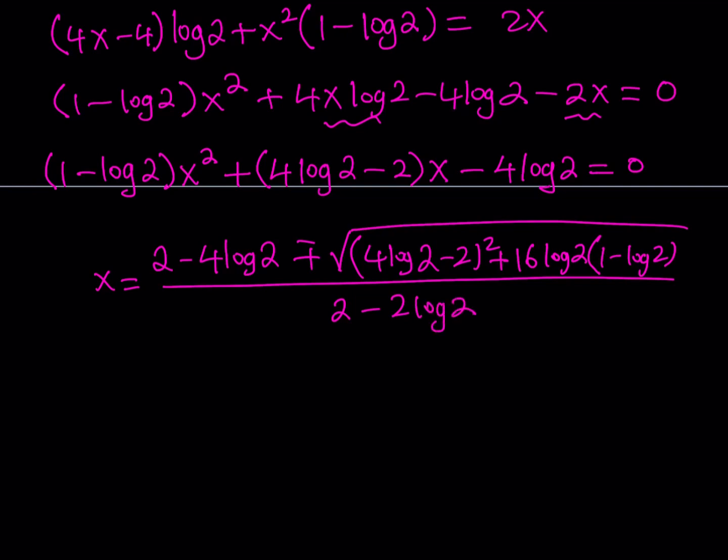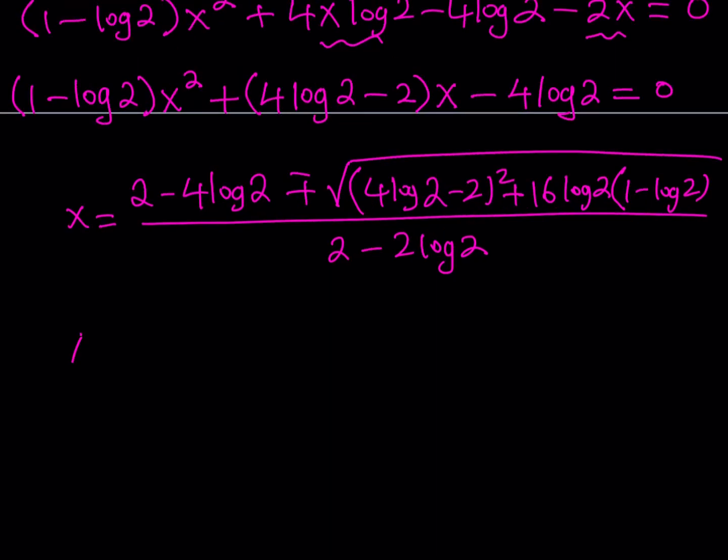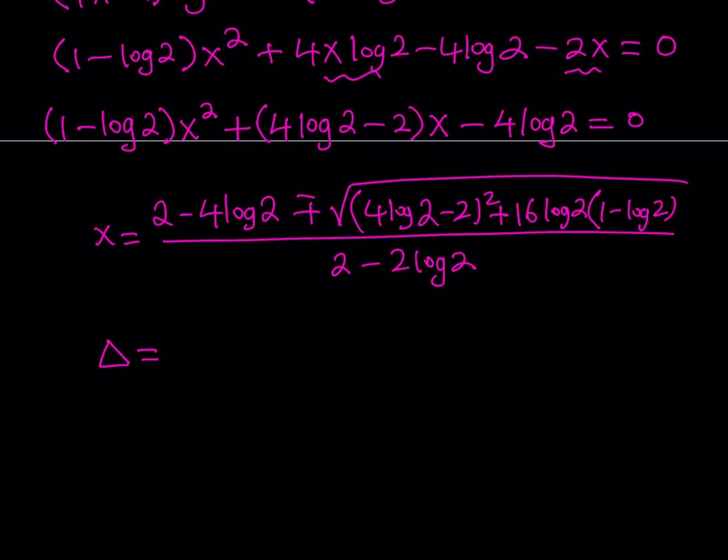So those are the answers. I can leave it at that, but I really want to simplify it. And remember, one of the solutions is supposed to be x equals 2. So where is x equals 2? Is it hidden here? Let's find out. How can I simplify this? I'd like to take the discriminant part and simplify as much as possible and then go back and substitute it. So let's expand this. Inside the radical, I have the discriminant. And by the way, it will be helpful if you use substitution here. So I'm going to call log 2 = u. So I have inside the radical: (4u-2)² + 16u(1-u).